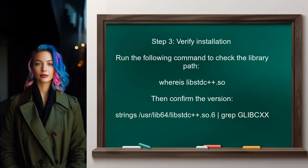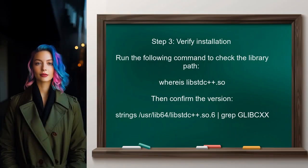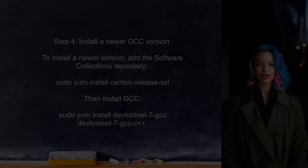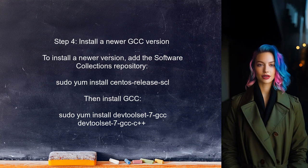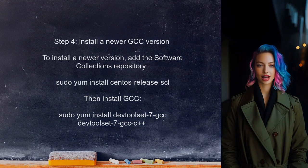After updating, verify that the new version of the library is correctly installed. This can be done by checking the library path and confirming the version again. If the correct version is still not found, you may need to consider installing a newer version of GCC that is compatible with the required libstdc++ version. This can be done using a specific repository.